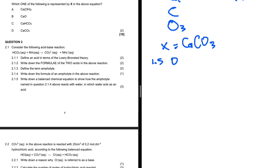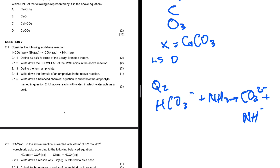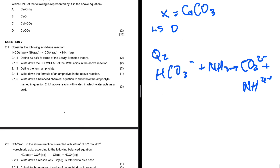Let's move on to question 2. Question 2.1 considers the acid-base reaction: HCO₃⁻ plus NH₃ to give us CO₃²⁻ plus NH₄⁺. Question 2.1.1 says define an acid in terms of Brønsted-Lowry theory. An acid is a proton donor. Question 2.1.2 says write down the formula of the two acids in the above reaction.